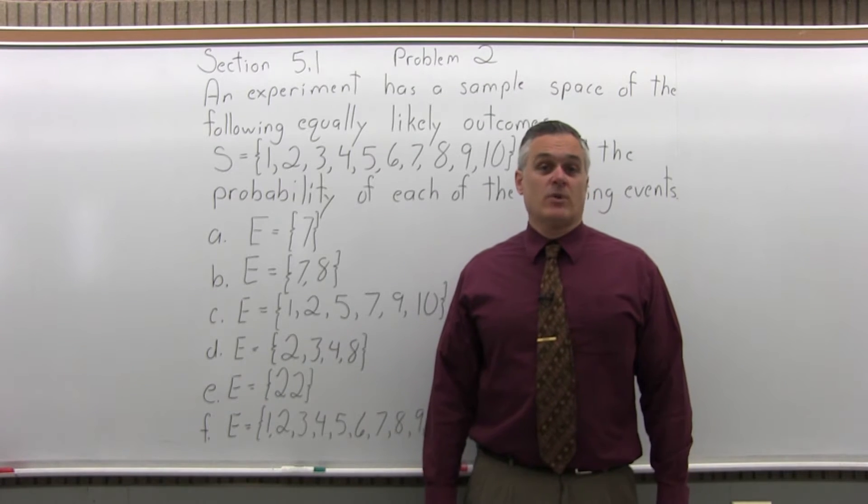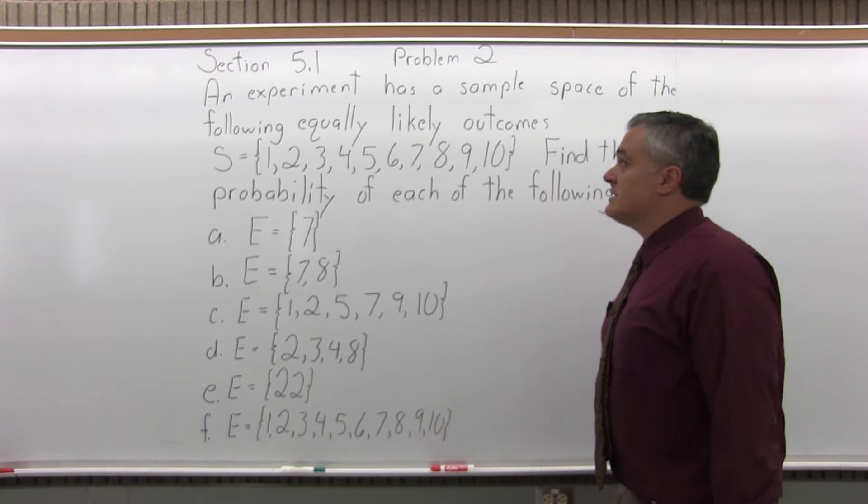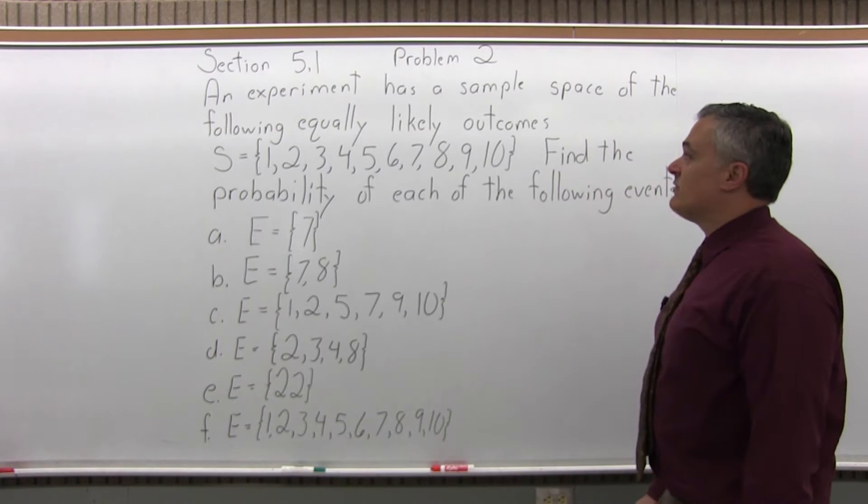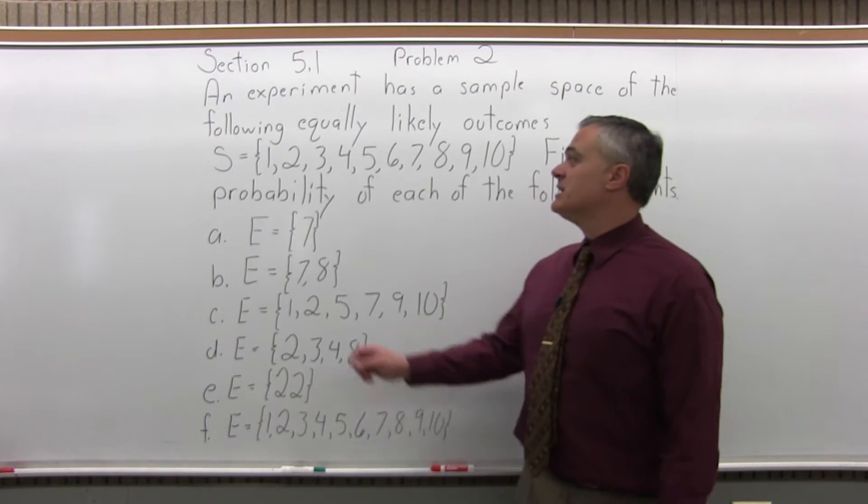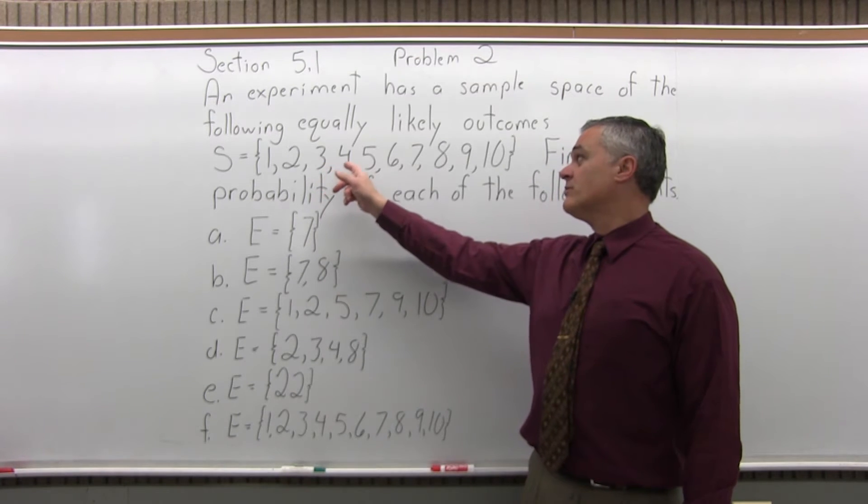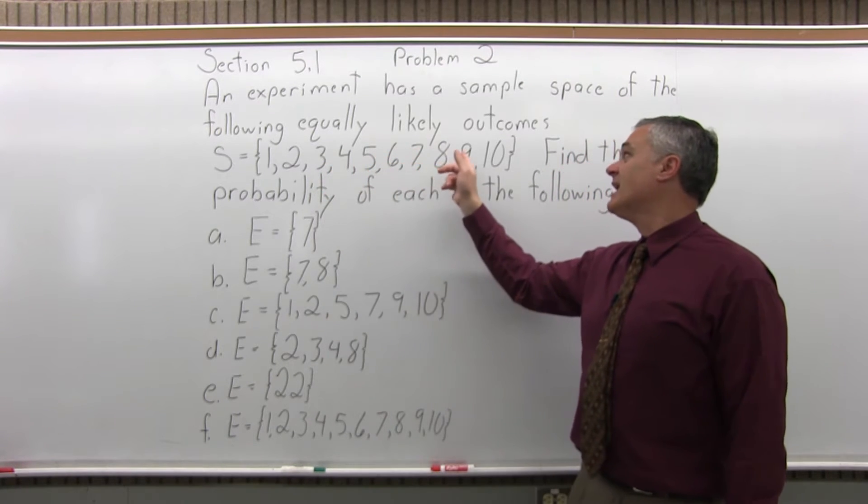This is Section 5.1, Problem 2. It says an experiment has a sample space of the following equally likely outcomes. The sample space is 1 through 10: 1, 2, 3, 4, 5, 6, 7, 8, 9, 10.